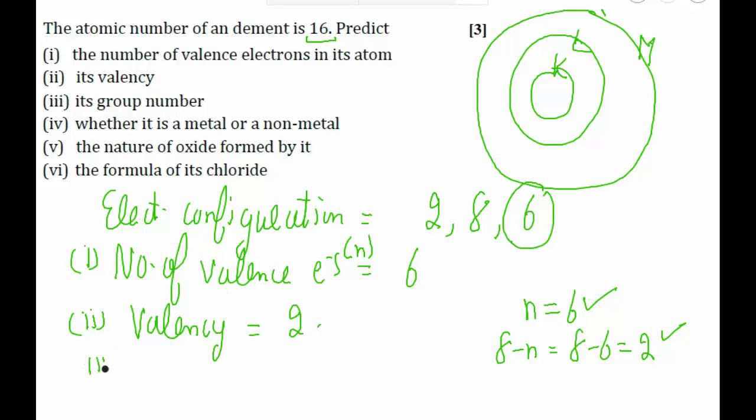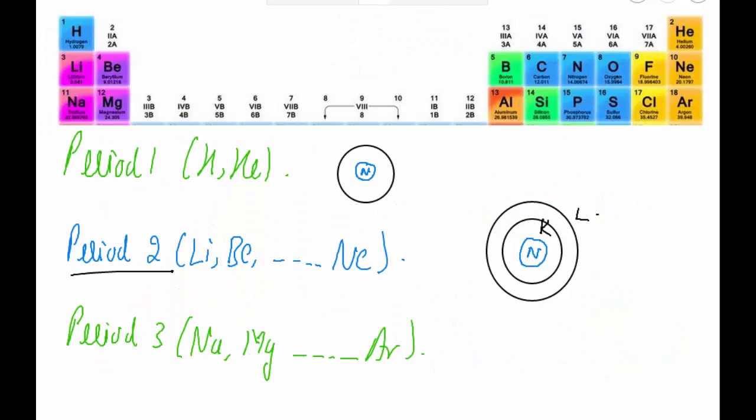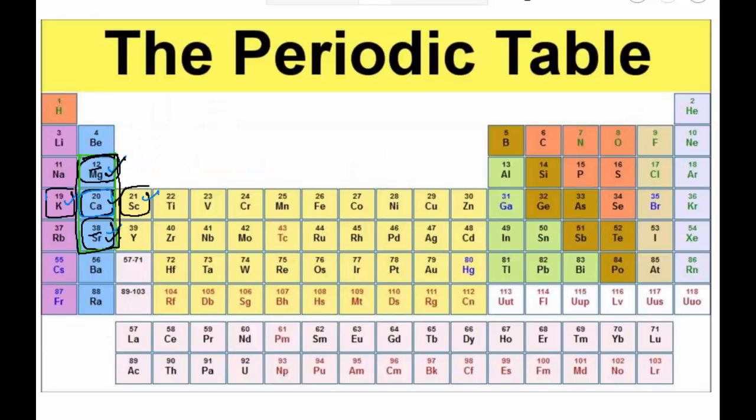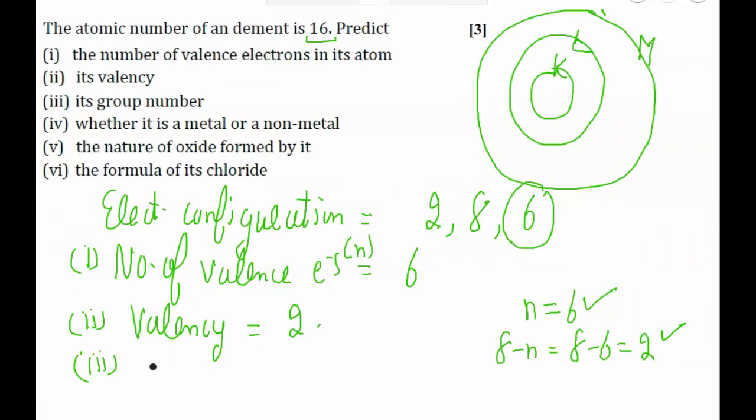In the third part they have asked for the group number. If we see in the periodic table, the element with atomic number 16 is sulfur, which lies in the 16th group of the periodic table. Hence the group number in this case is 16.